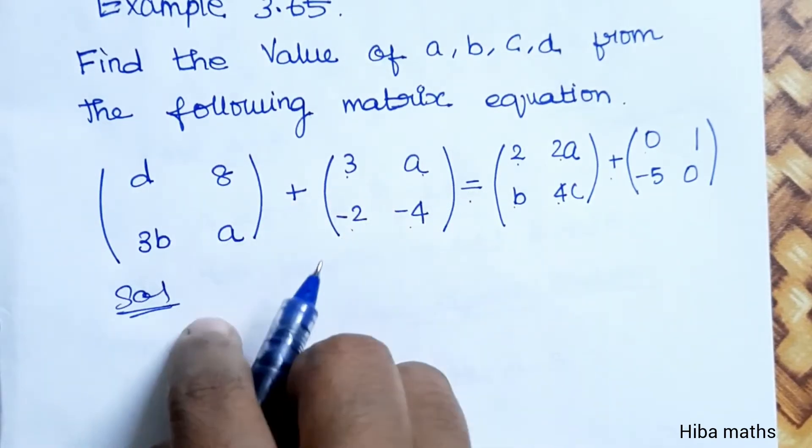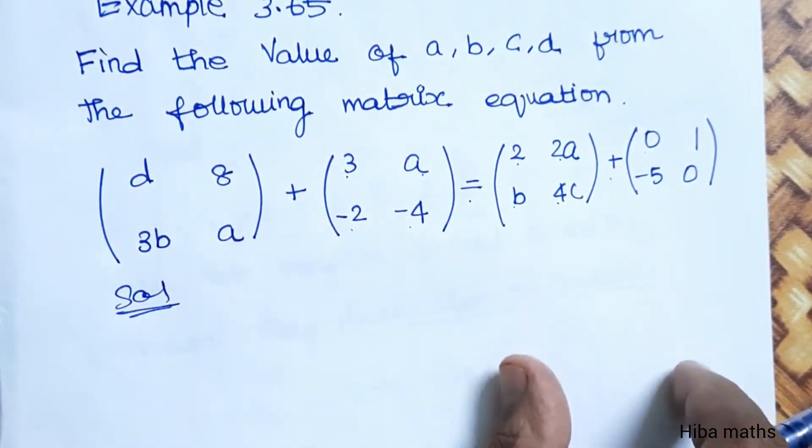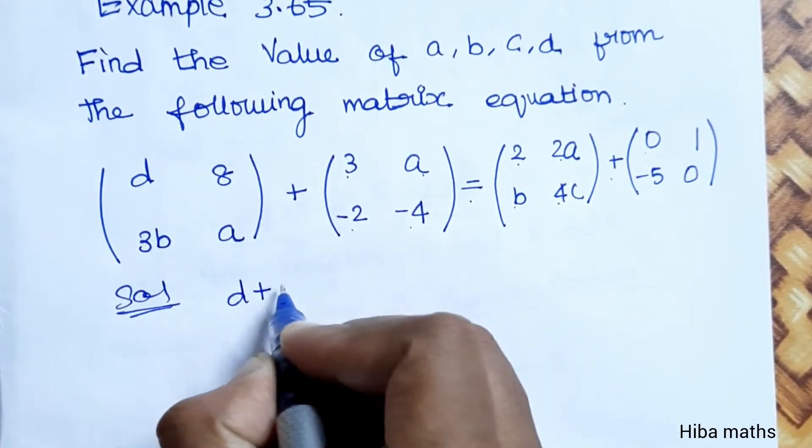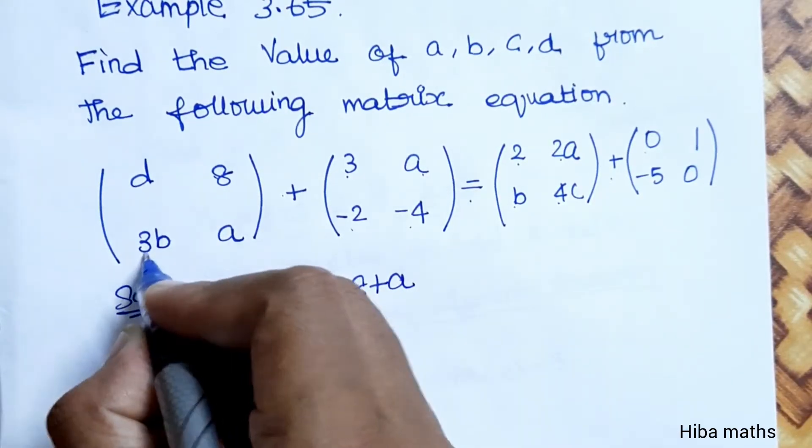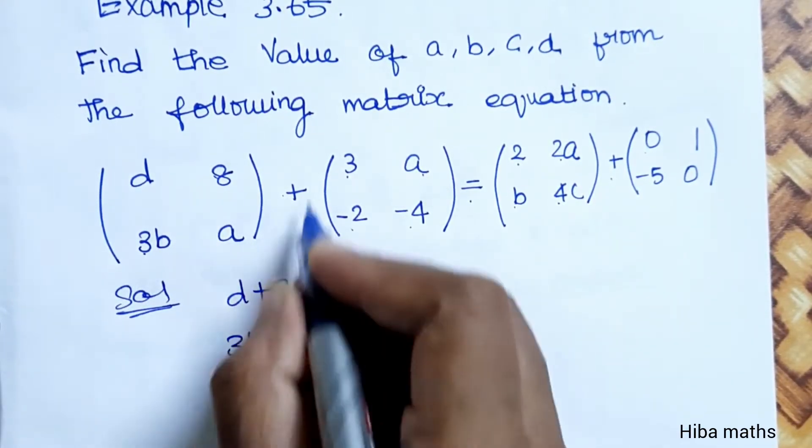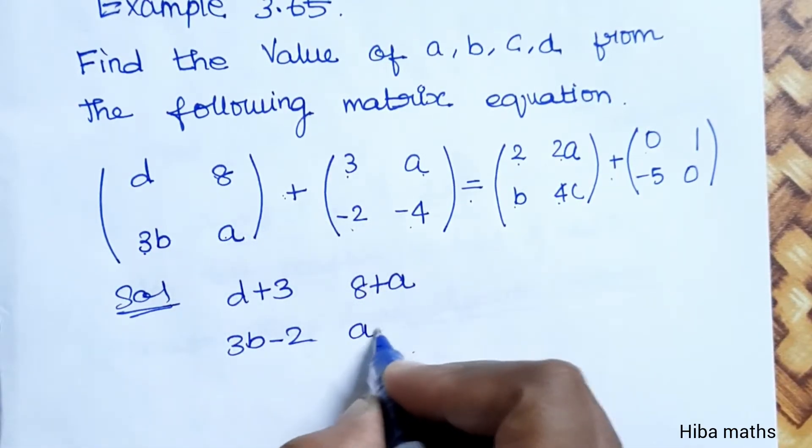The left matrix is equal to the right matrix. D plus 3, 8 plus A, 3B plus into minus minus 2, A plus into minus minus 4.